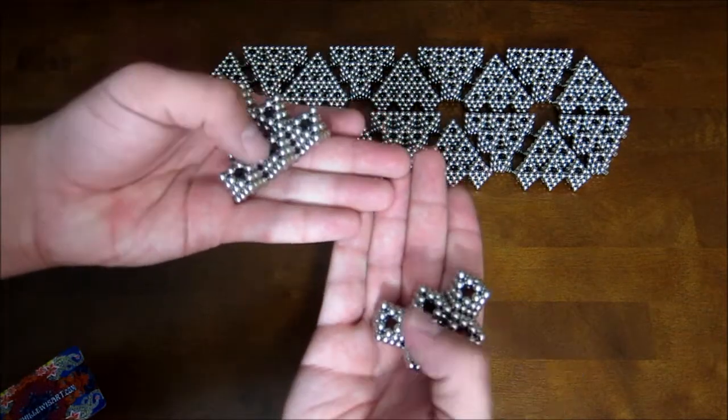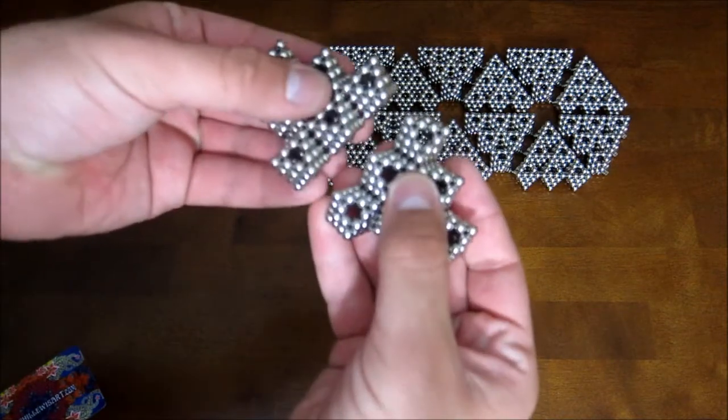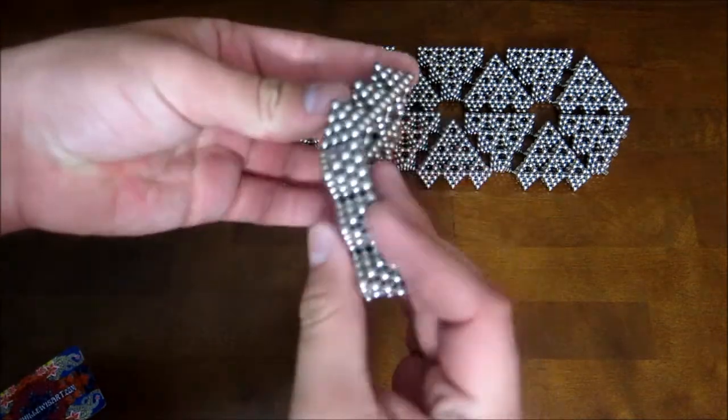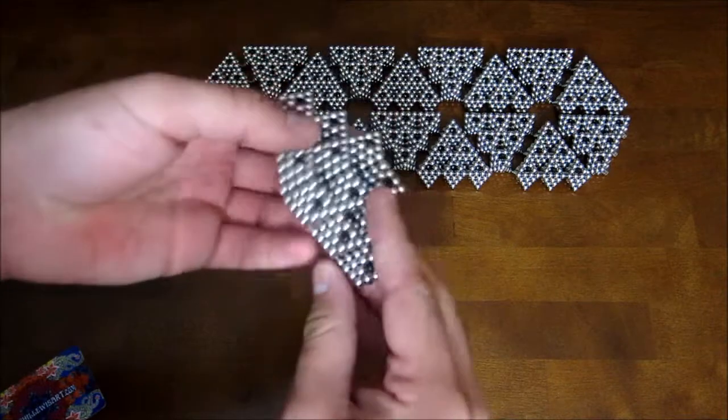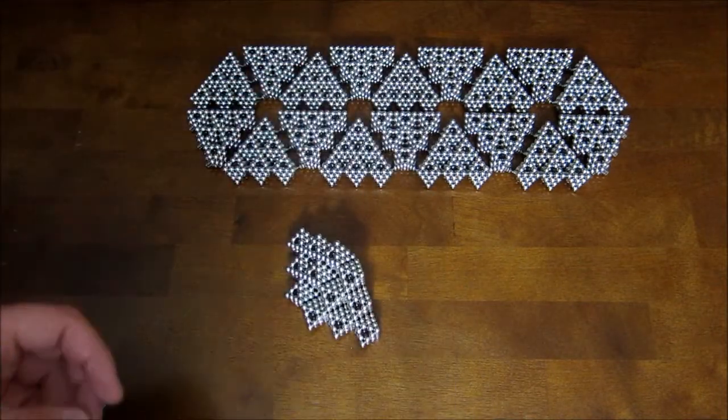On the other side they look like this and these are the outside. And they attach together just like that. And then you just attach all 20 of them together to make an icosahedron.